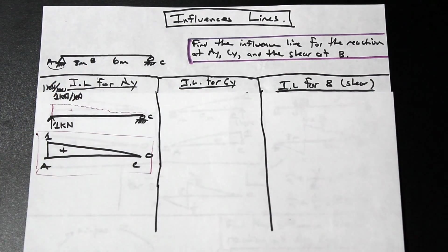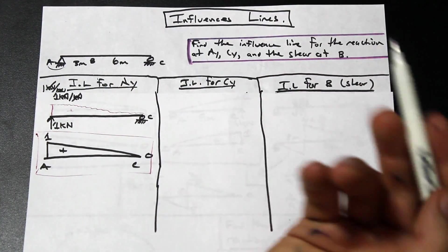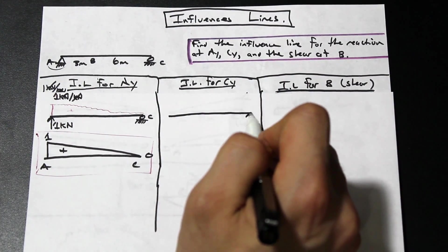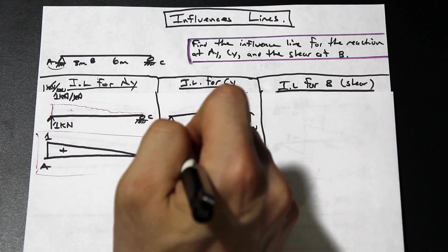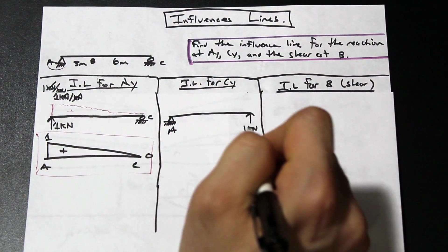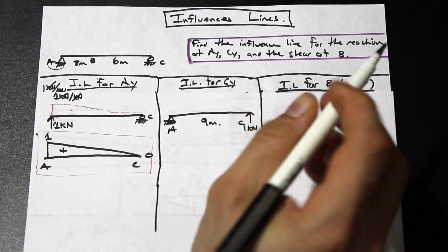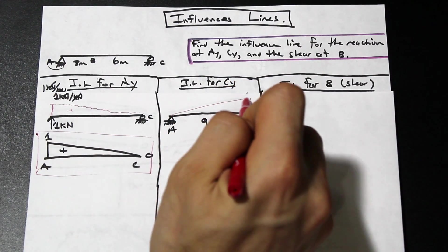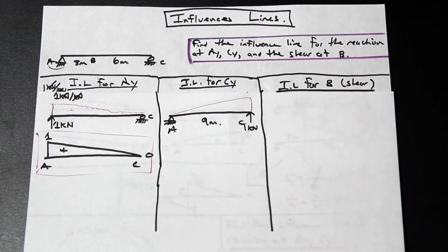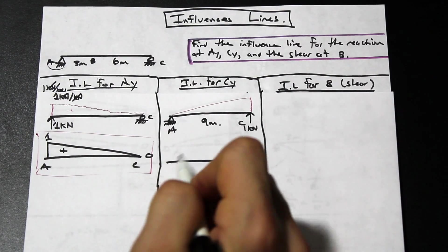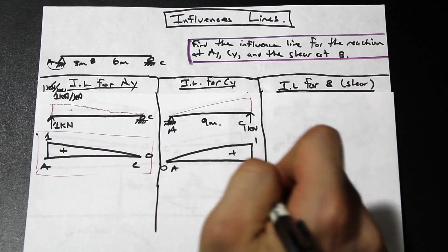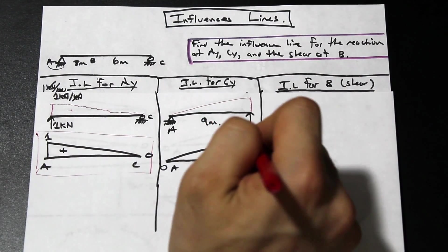I try to avoid the equation method — cutting the beam and dealing with the left and right sides can be very confusing. Let's find the influence line for CY using the same approach. Draw the beam again, release at C, apply our one kilonewton load. We still have our pin support at A over nine meters. The deflected shape is the same but opposite, giving us one at C and zero at A.